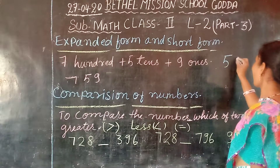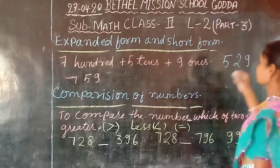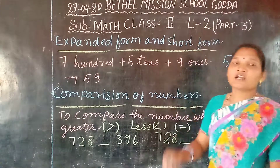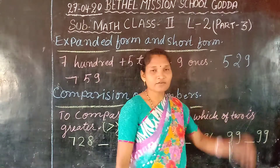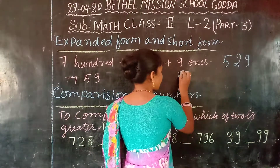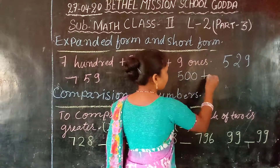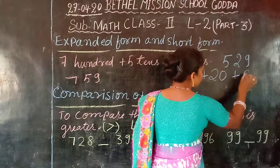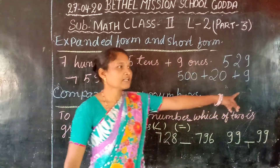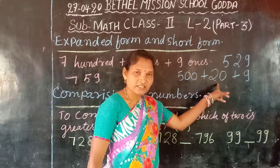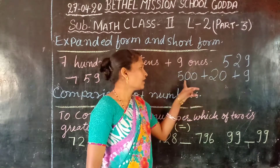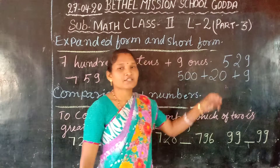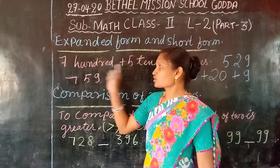For example, five hundred twenty nine. How do you write this in expanded form? We write five hundred plus twenty plus nine. So how many ones? Nine ones, two tens, and five hundred. This is how we read and write the expanded form.